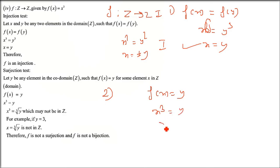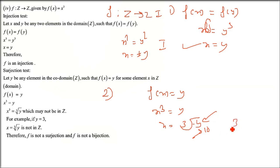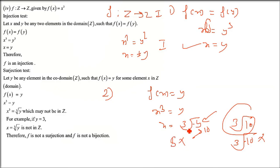Checking surjection for f(x) = x³ from ℤ to ℤ: setting x³ = y gives x = ∛y. If y = 10, then ∛10 is not an integer - we need proper non-decimal numbers. The cube root of 10 is invalid in ℤ, so this is not surjective. It was injective but not surjective, so it is not bijective.